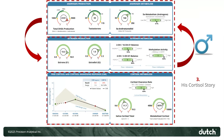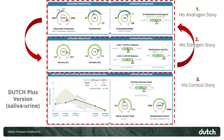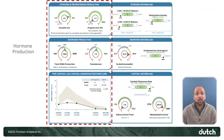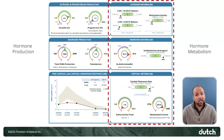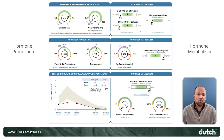For a male patient, we're going to flip that order and start with the androgen story, then move into the estrogens, which are still important for male patients, and then move down to the cortisol story. We're also dividing it neatly into hormone production on the left — estrogen, androgen, cortisol — and estrogen, androgen, and cortisol metabolism on the right. So production on the left, hormone metabolism on the right.